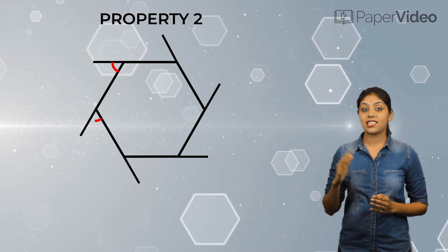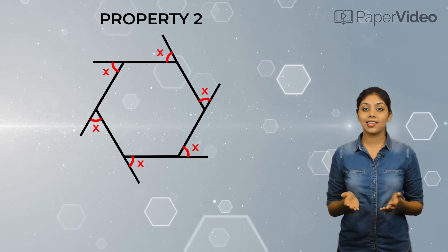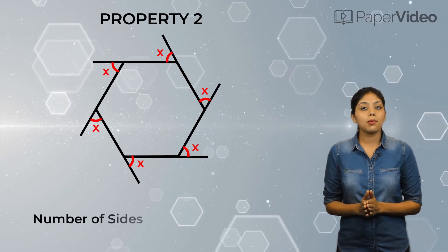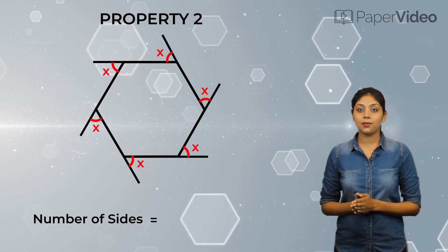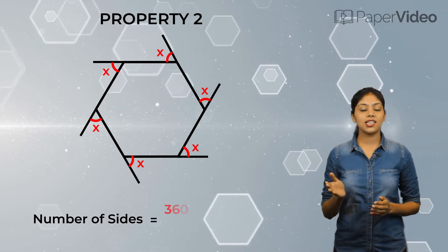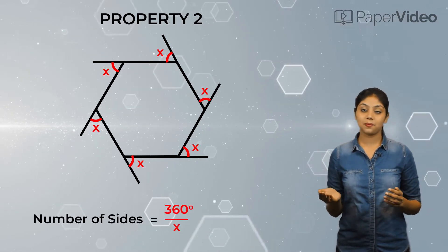According to the second property, if each exterior angle of a regular polygon is x, then the number of sides of the polygon is equal to 360 degrees upon x.